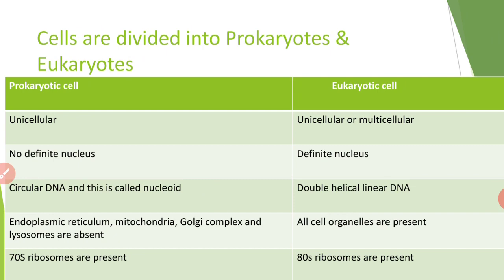Eukaryon means true nucleus — 'eu' means true, 'karyon' means nucleus. All cells containing a true, definite nucleus surrounded by nuclear membrane can be called eukaryotic cells. So cells are basically divided into prokaryotes and eukaryotes. Let us list out the various similarities and differences between prokaryotes and eukaryotes.